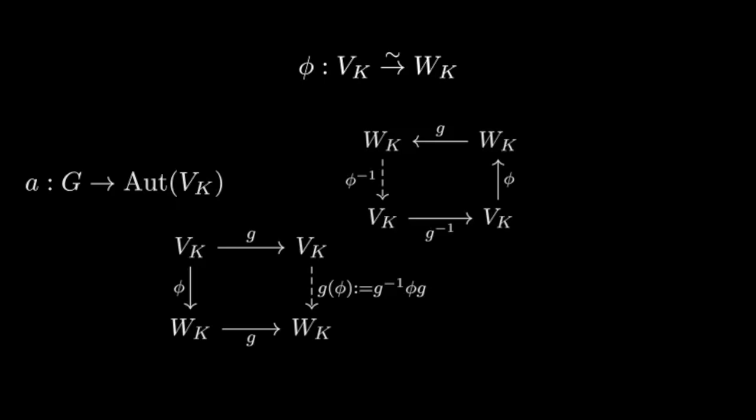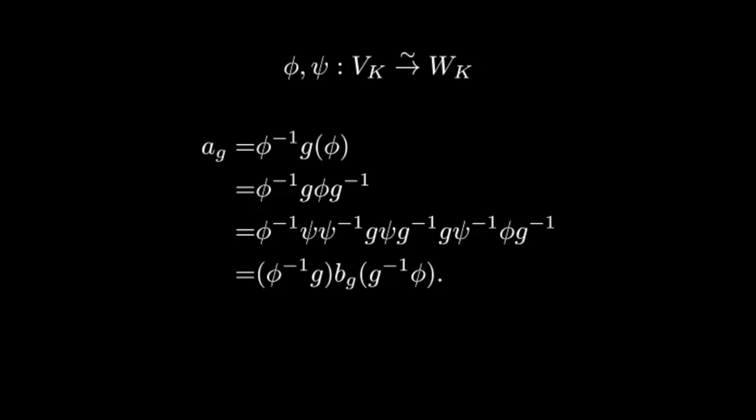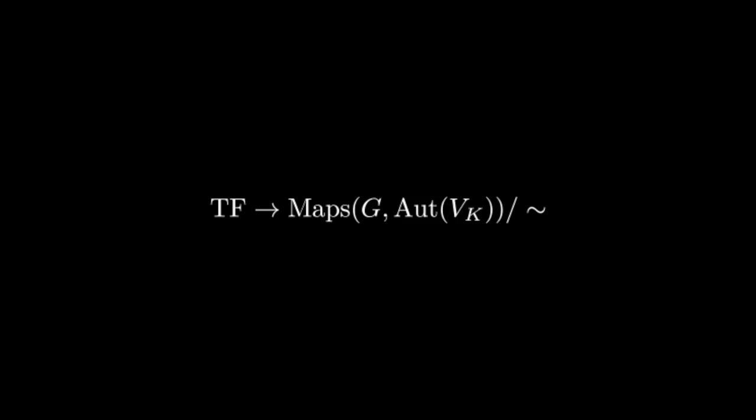So suppose there's another isomorphism, psi, determining a map b. Well, we can calculate the following. So we see that if a and b differ by a choice of isomorphism, then a_g is equal to c inverse b_g c for all g in G. So in order to make the association twisted forms to maps from G to automorphisms of V_K well-defined, we need to mod out by this relation. Then the resulting map is well-defined.